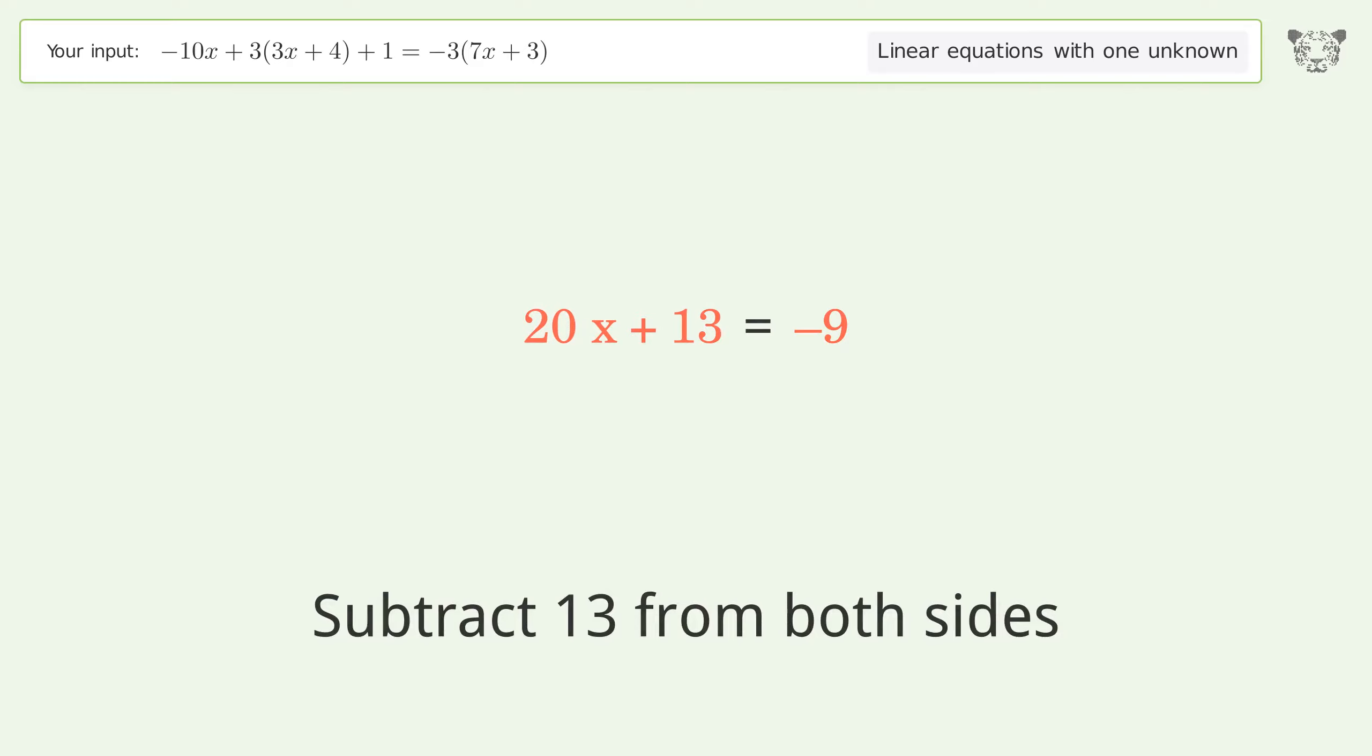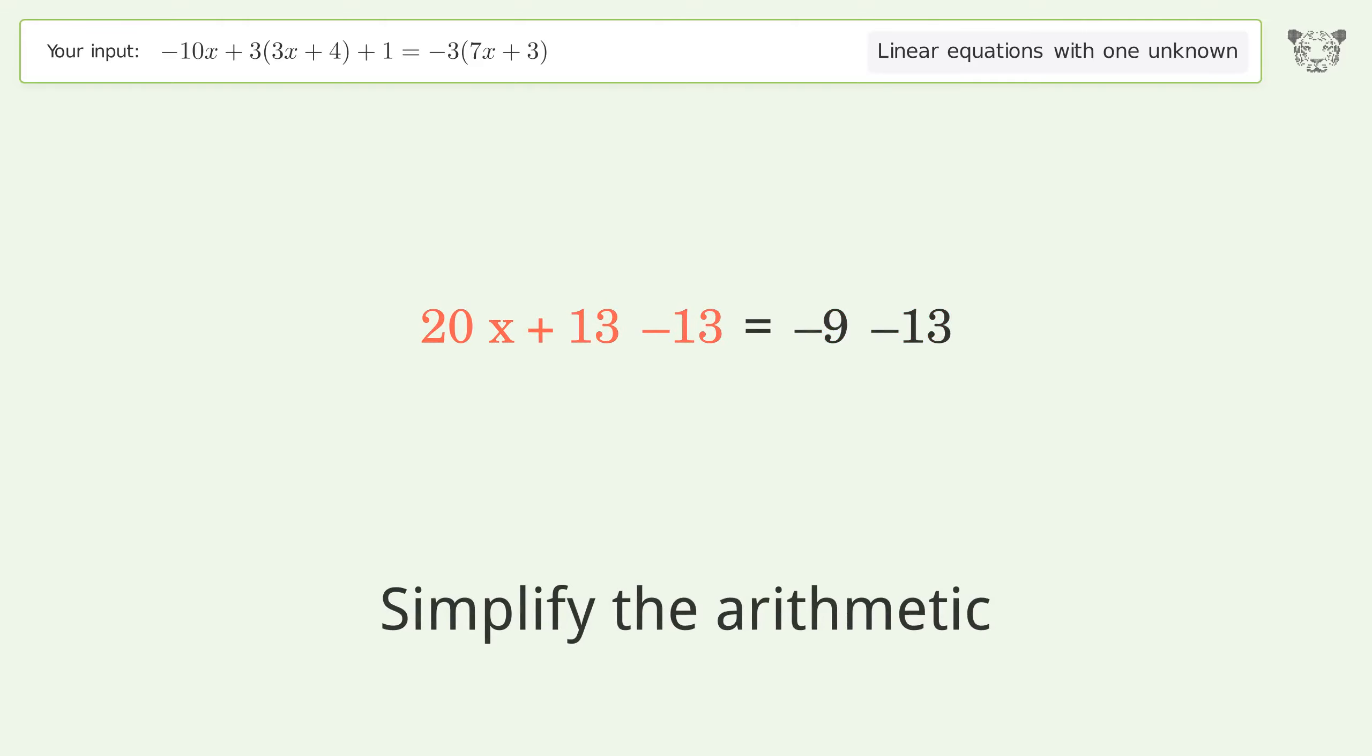Group all constants on the right side of the equation, subtract 13 from both sides. Simplify the arithmetic.